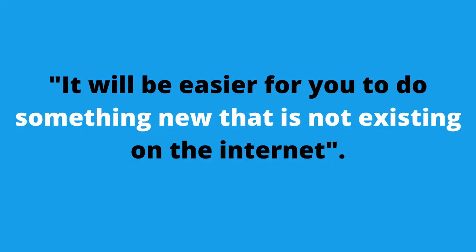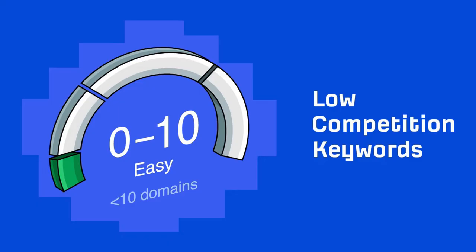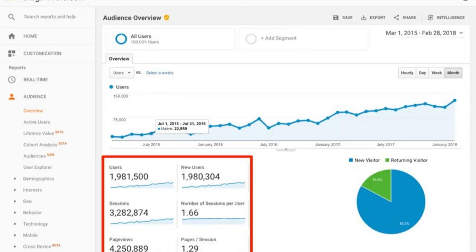Because then it will be easier for you to do something new that is not existing on the internet. Choosing a topic with less competition among the things you know and can do to build a website will make it easier for you to get traffic quickly and make your website successful.